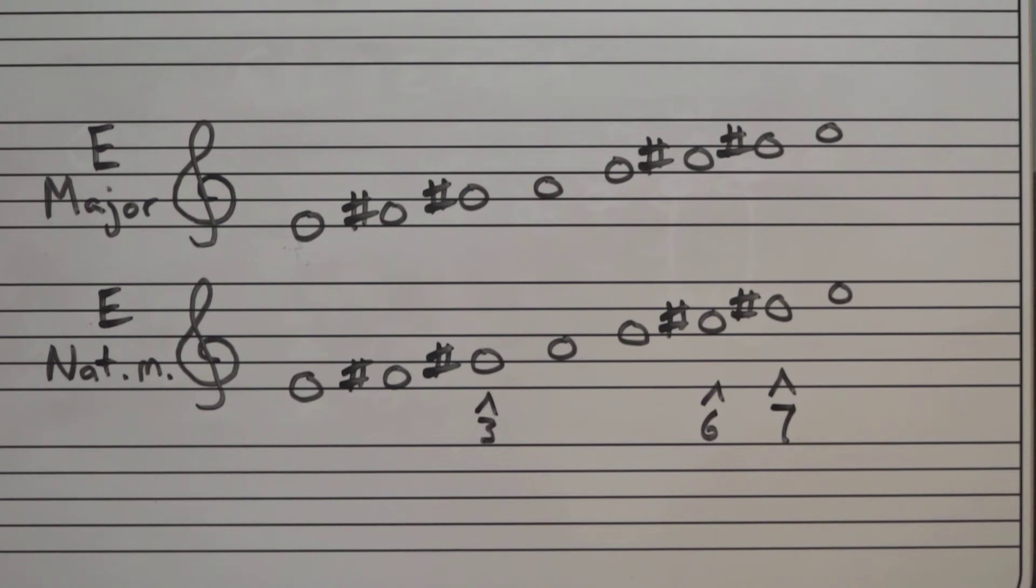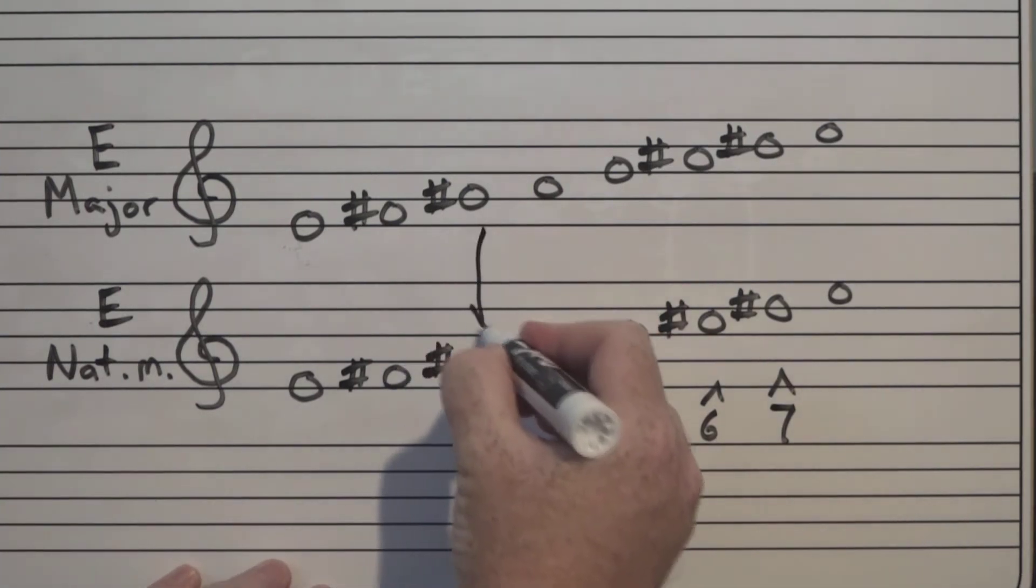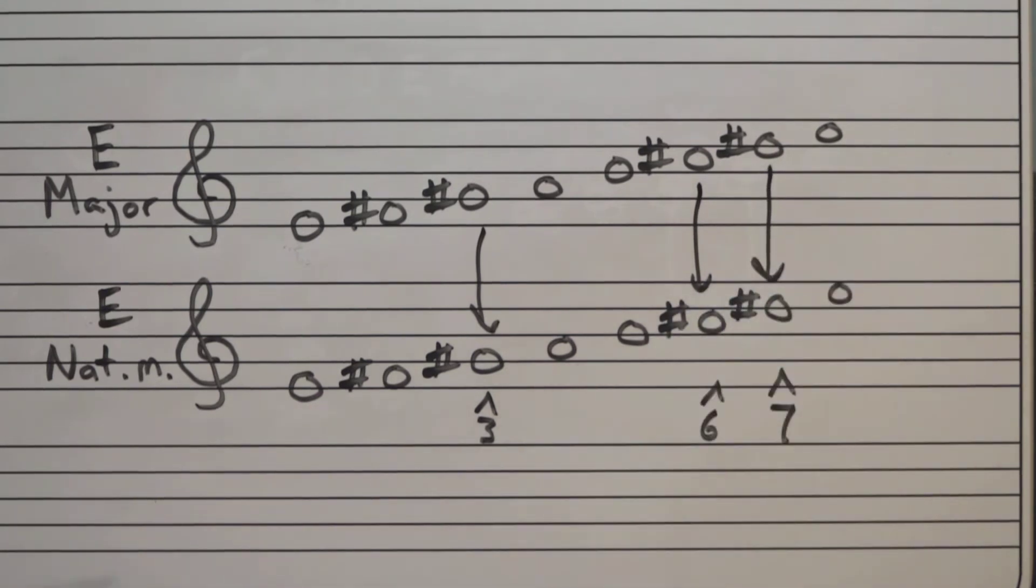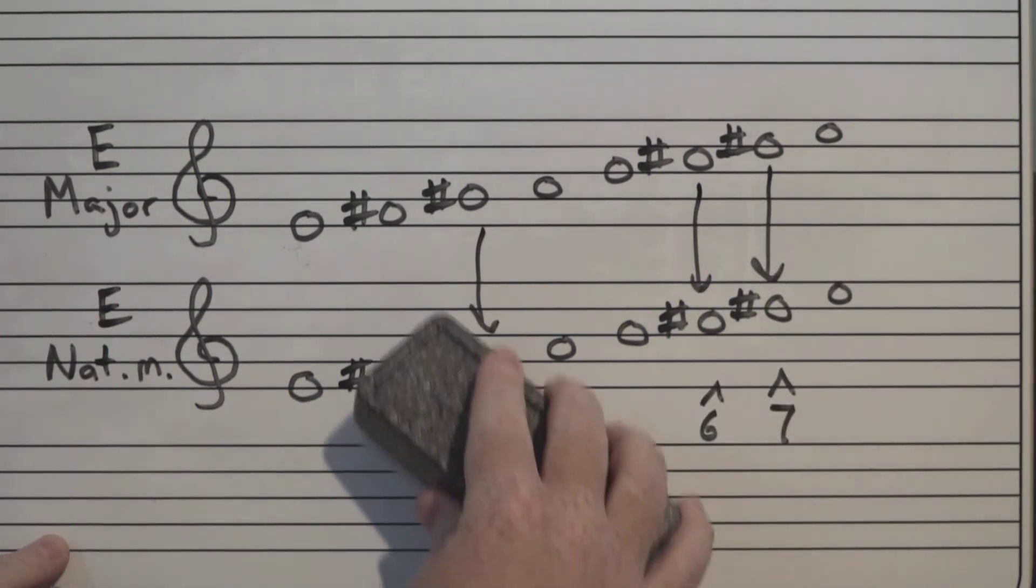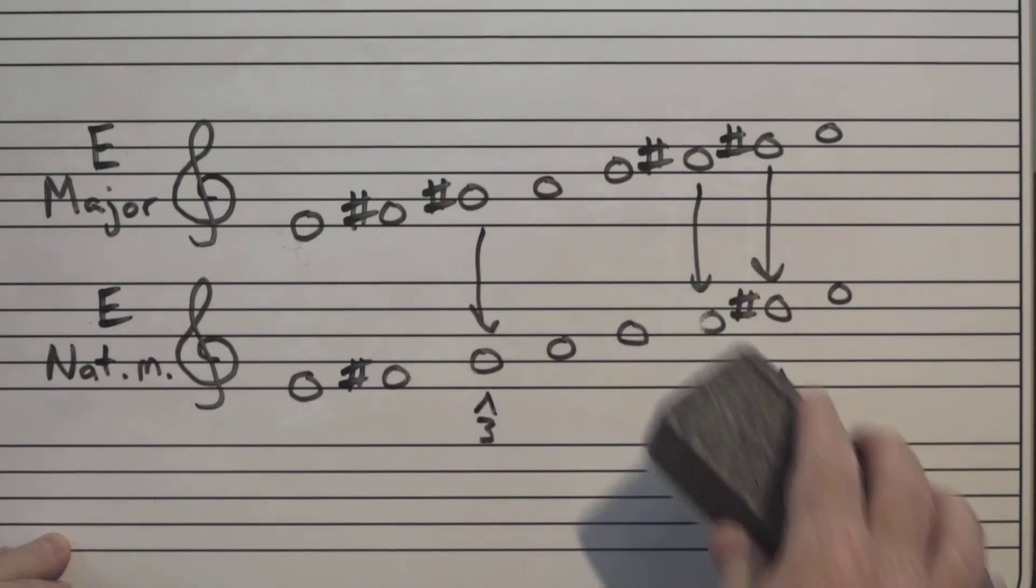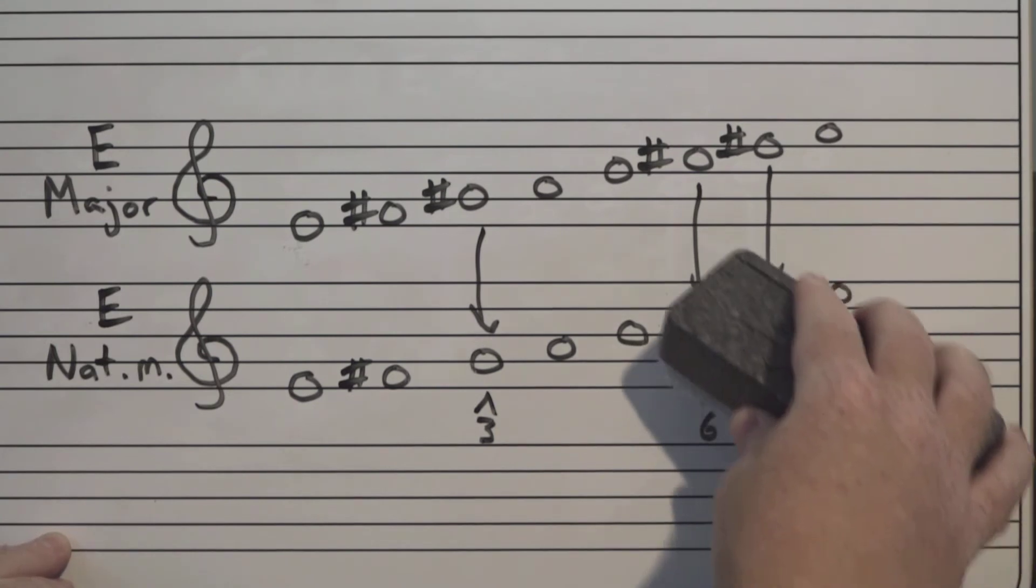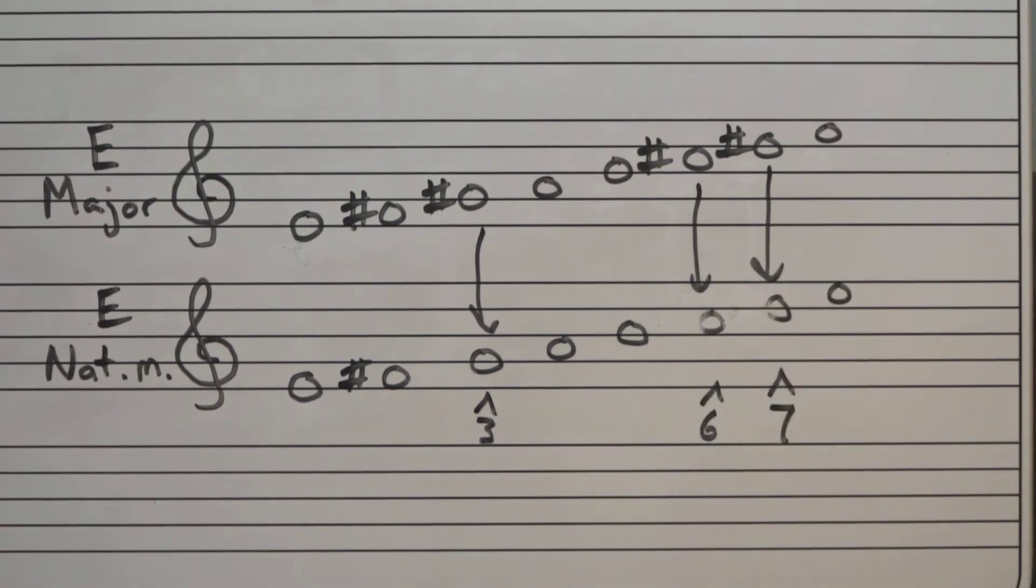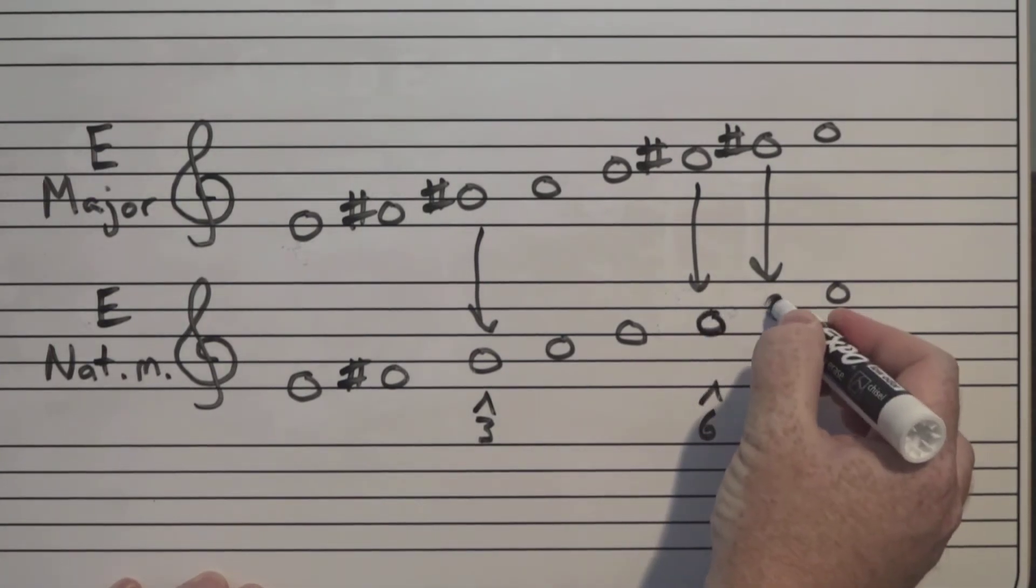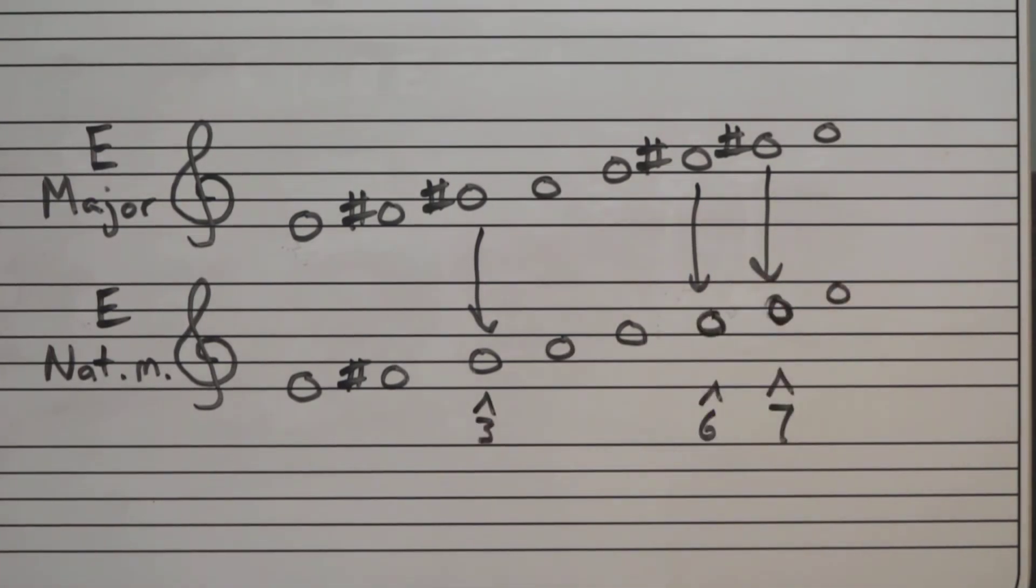Now when we lower these three notes, notice they already have a sharp on them. So to lower them, we're just going to take that away. And scale degree six, and scale degree seven, there we are in E natural minor scale, just has an F sharp.